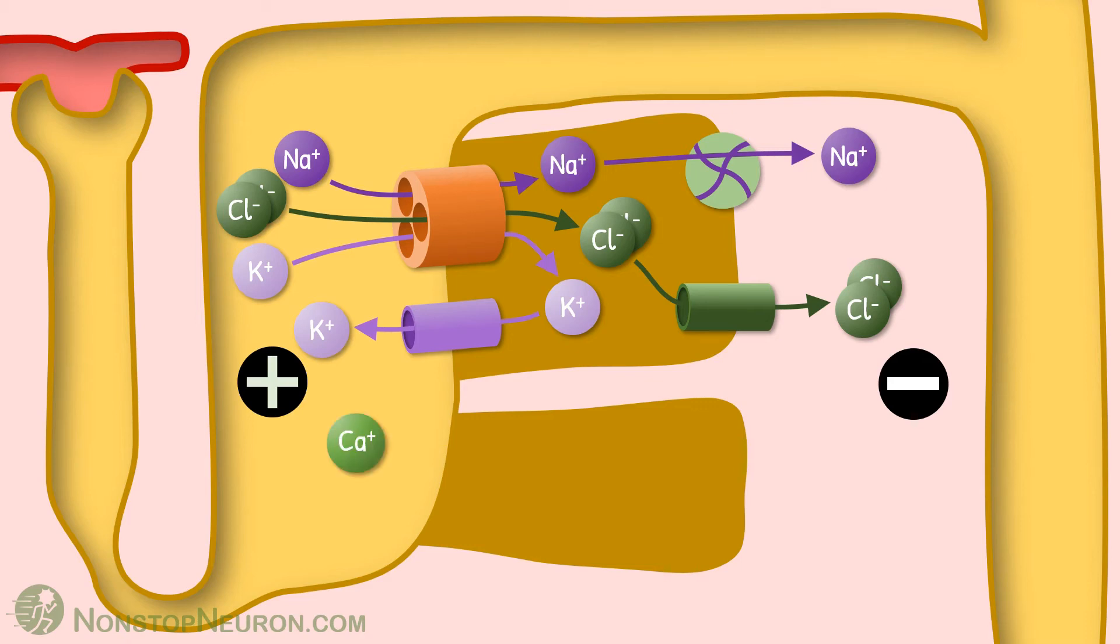This electrical gradient drives movement of positively charged ions like calcium and magnesium from lumen into the interstitium. This movement occurs through paracellular space. So this is how calcium is reabsorbed in thick ascending limb.